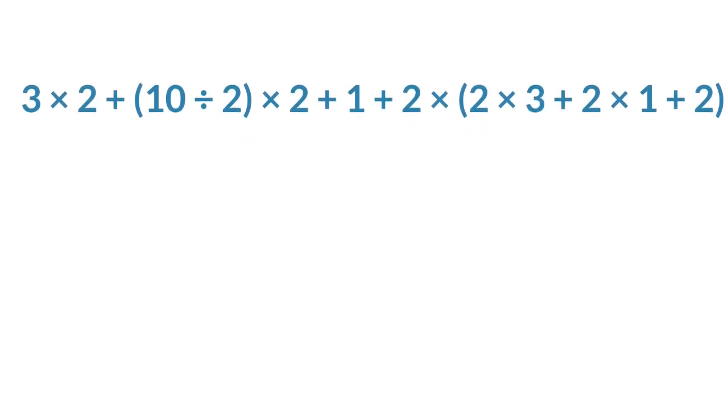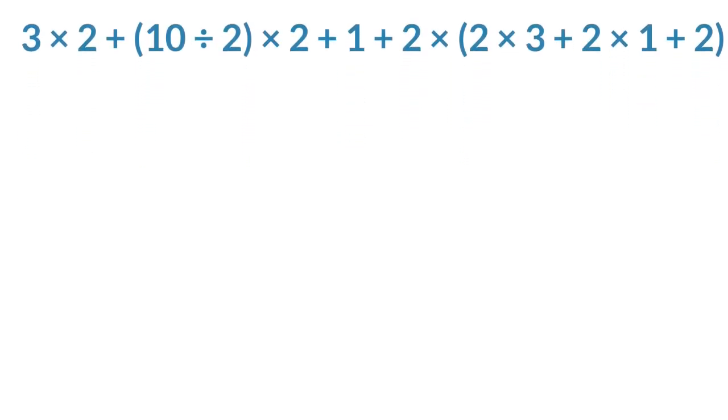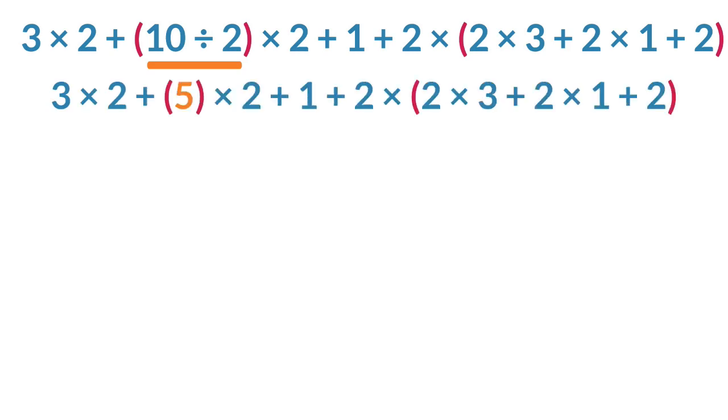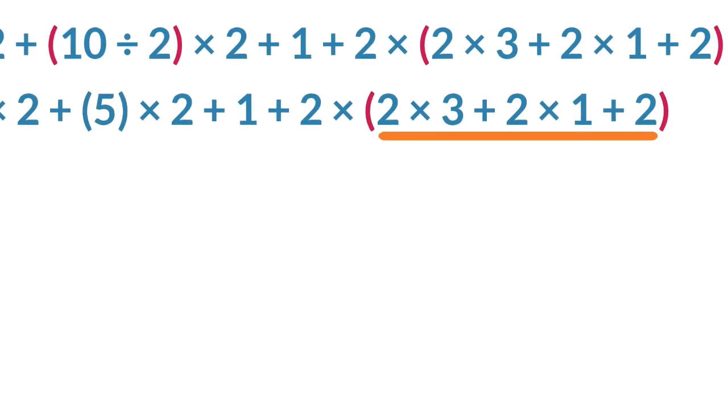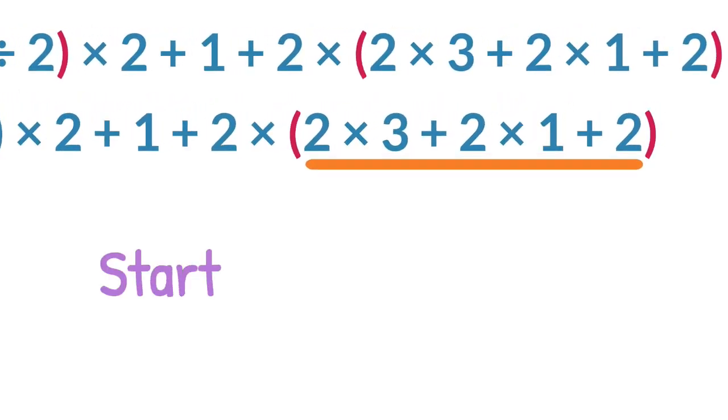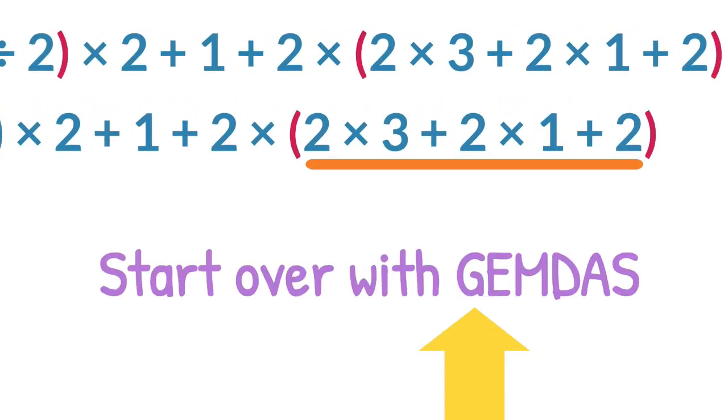The acronym GEMDAS helps us remember to start with grouping symbols. The first step means focusing on the stuff inside the first set of grouping symbols we come to, reading from left to right. We start with 10 divided by 2, which is 5. This fully simplifies the first set of parentheses. Now, we deal with everything inside the second set of parentheses. Each time we enter a set of parentheses, we start back over by looking for grouping symbols.